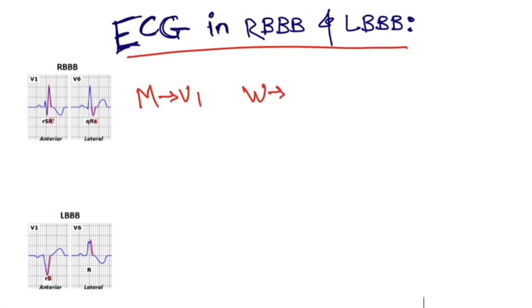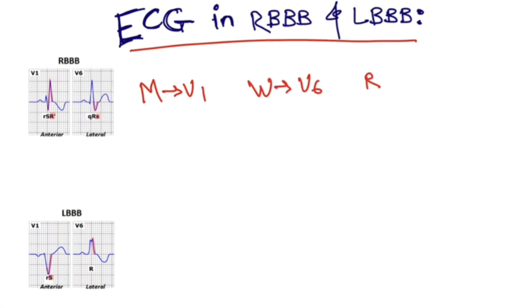W pattern in V6 in right bundle branch block. Similarly for left bundle branch block there is a W pattern in